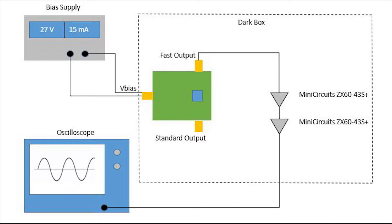Each mini circuits amplifier requires a separate 5 volts power supply. The SIPM SMA evaluation board is supplied by 27 volts and 15 milliamps from a bias supply.